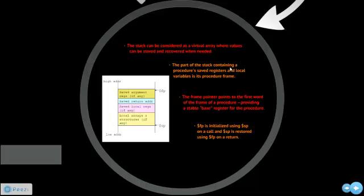The stack can be considered as a virtual array where values can be stored and recovered when needed. The part of the stack containing a procedure's saved registers and local variables is its procedure frame. The frame pointer points to the first word of the frame of a procedure, providing a stable base register for the procedure. The frame pointer is initialized using the stack pointer on a call, and the stack pointer is restored using the frame pointer on a return.